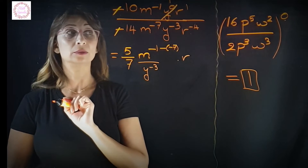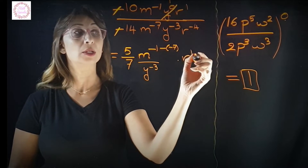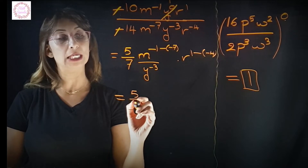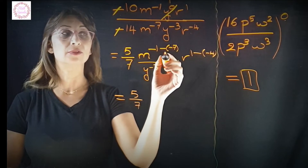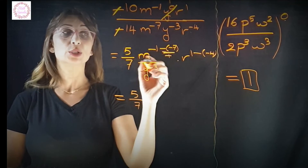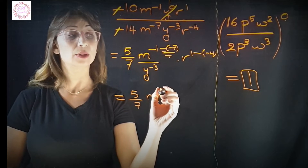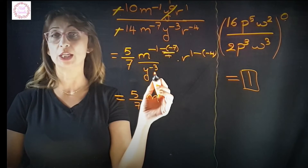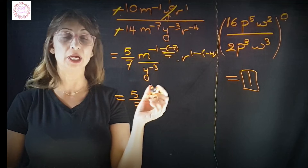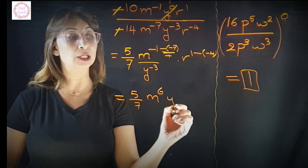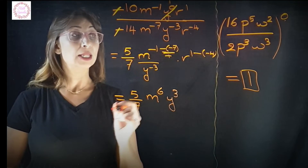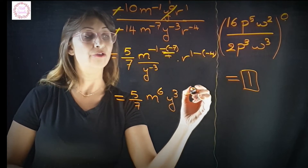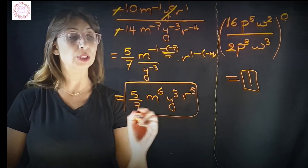For r, we have r power 1 over r power negative 4, giving r power 1 minus negative 4. Now settling everything: m power negative 1 minus negative 7 equals m power 6. The y power negative 3 in the denominator flips to the numerator as y power positive 3. And r power 1 minus negative 4 equals r power 5. So the final answer is 5 y cubed r power 5 over 7 m power 6.